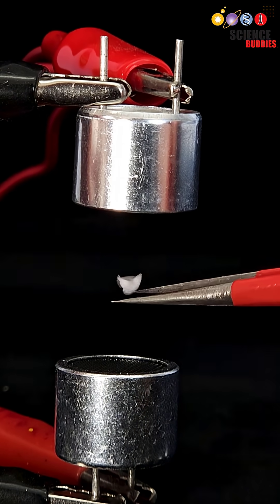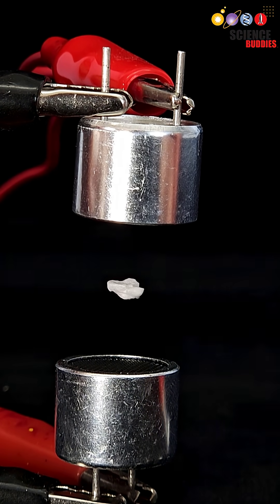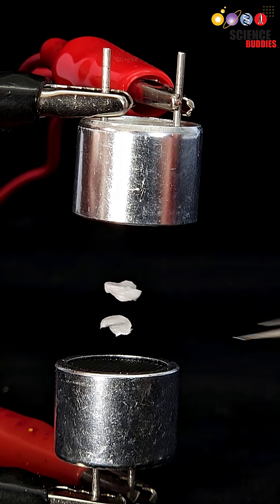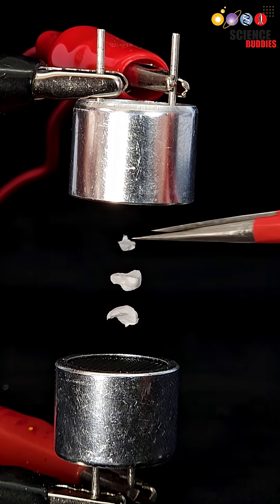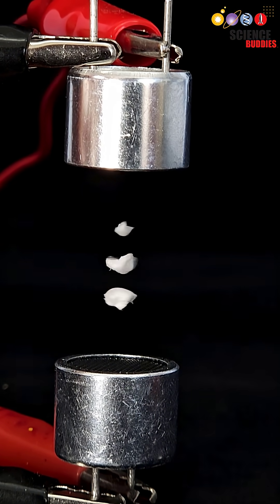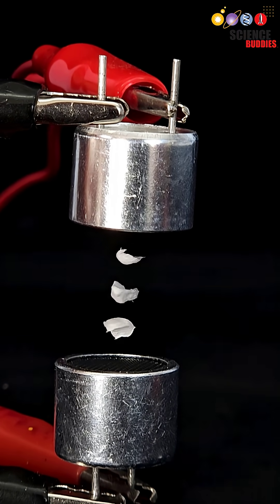Circling back to our demonstration, we can now understand why the bits of foam seem to snap to certain locations and I can't get them to hover right next to or touching each other. They're getting stuck in the pressure nodes and the distance between those nodes depends on the wavelength of the sound.